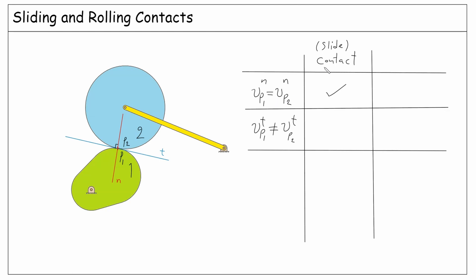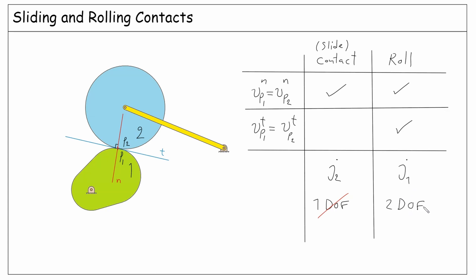The contact and sliding contact are in fact the same things, because when we say just contact, we know that it basically allows sliding. Now let's talk about the rolling contact, which applies more restrictions. In the rolling contact, in addition to the normal velocities, the tangential velocities should also be the same. When computing the degrees of freedom, we consider a sliding contact as a J2 constraint, because it takes only one degree of freedom, forcing the velocities at the contact point to be identical along the normal direction. Whereas a rolling contact must be considered as a J1 constraint, since it takes two degrees of freedom, forcing the velocities at the contact point to be completely the same in both the normal and tangential directions.